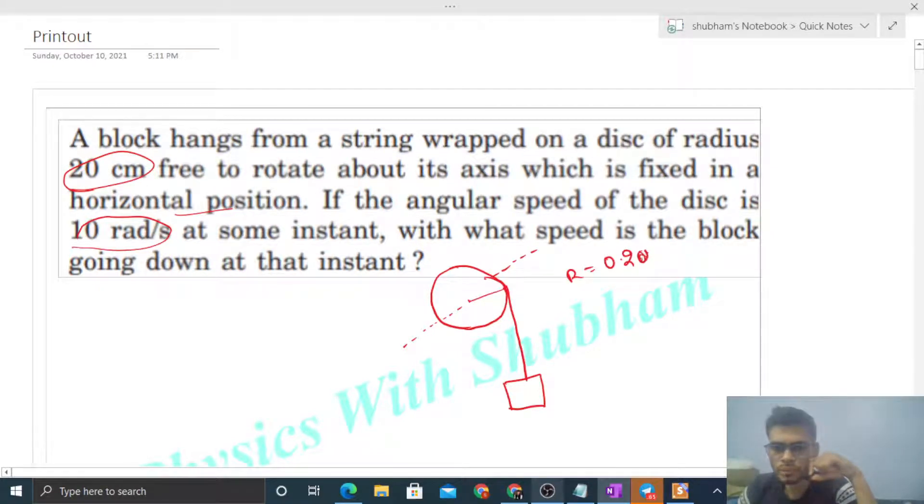At some instant, if the disk is rotating with angular speed omega equal to 10 radian per second, then you can see this point P at the circumference of this disk. Its linear speed will be R into omega. What is R? That is 0.2. What is omega? That is 10 radian per second.